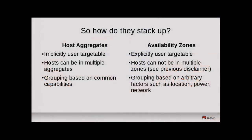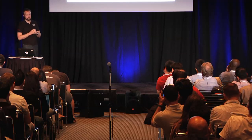Stacking these up: host aggregates are implicitly user-targetable; availability zones are explicitly user-targetable, though that targeting isn't mandatory — if the operator sets a default availability zone, requests will go there even if none is specified. Hosts can be in multiple aggregates but not multiple availability zones. At the core, a host aggregate is used for grouping by capability, while an availability zone is used for grouping on some arbitrary factor — typically a failure domain.